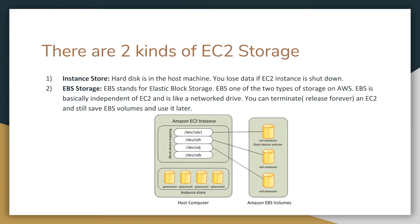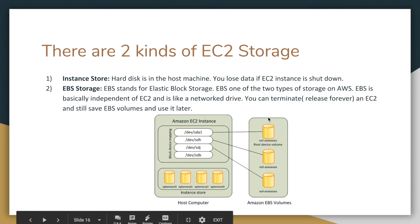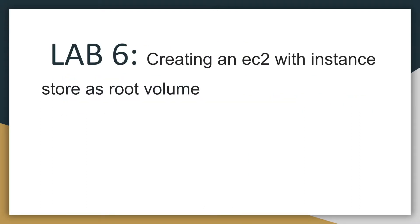Welcome back. In the slides, we talked about two kinds of EC2 storage: EBS volumes and the instance store. The instance store volumes are the volumes physically attached to the host machine where your EC2 instances live. So far we've been using EBS volumes only to launch our instances. In this lab, we'll be creating an EC2 instance with instance store as root volume.